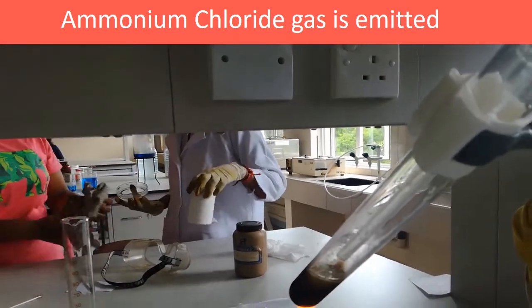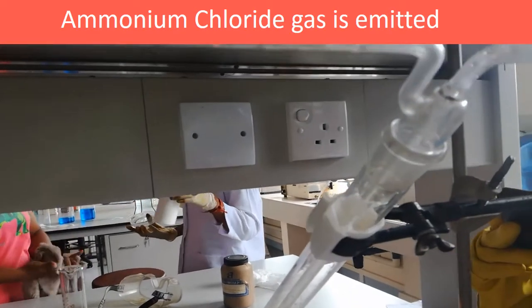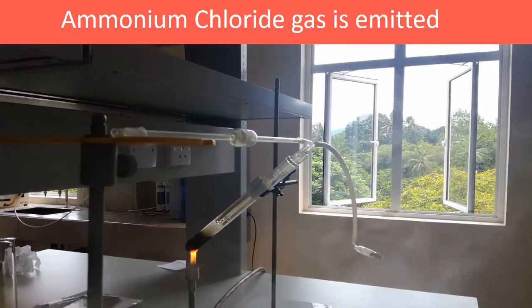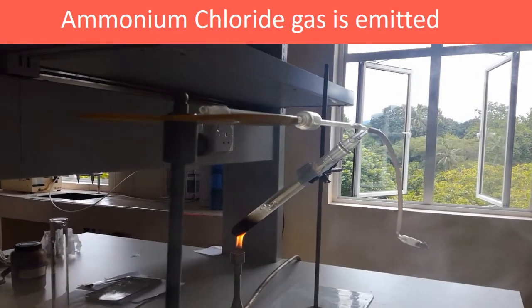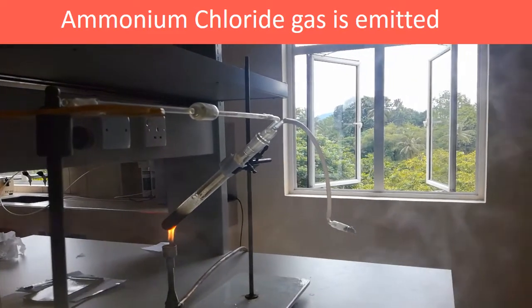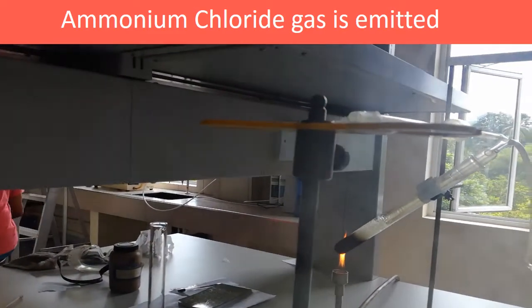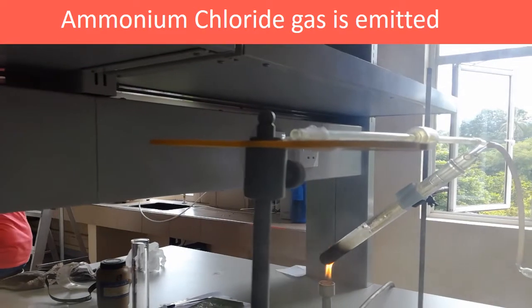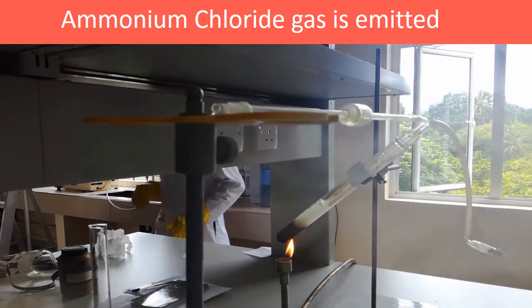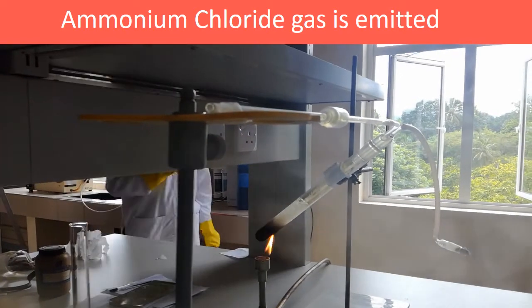To increase amount of ammonium chloride product, we heat the ammonium nitrate solution by using Bunsen burner. Next, we can see emitted ammonium chloride goes along the thin pipe. This is an example of eddy diffusion and molecular diffusion.